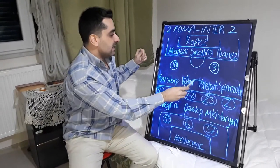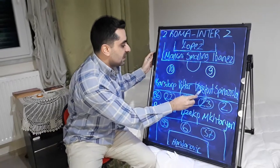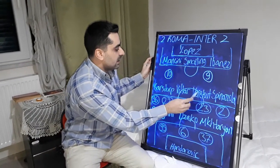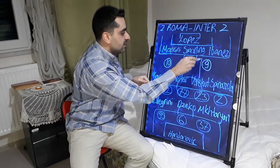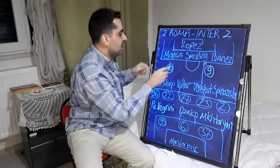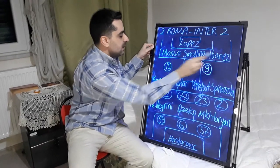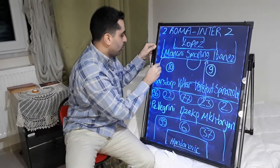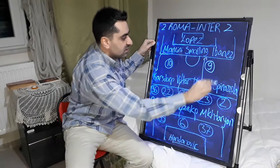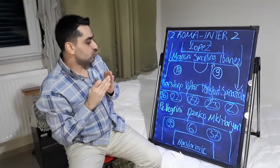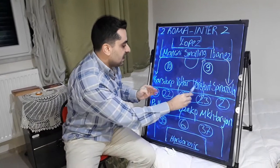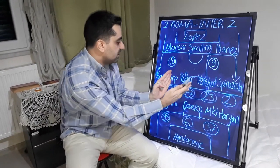And in Roma sometimes Veretout came to the centre of the defence, next to Smalling. Veretout came here and Mancini and Ibáñez came close to midfield line. And in Roma, Villar and Veretout played close to each other.